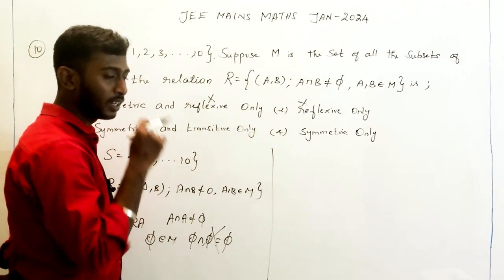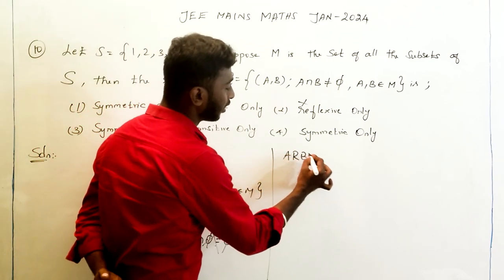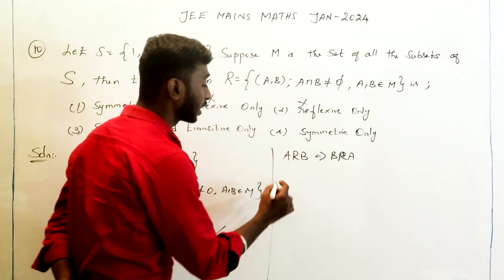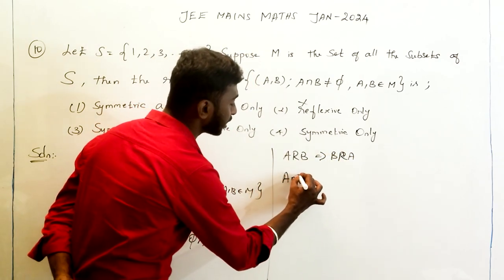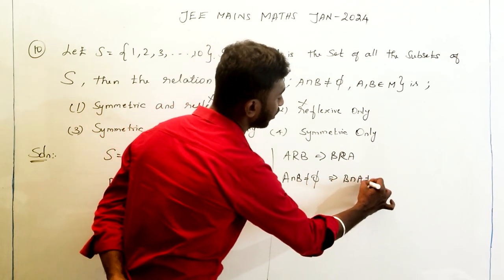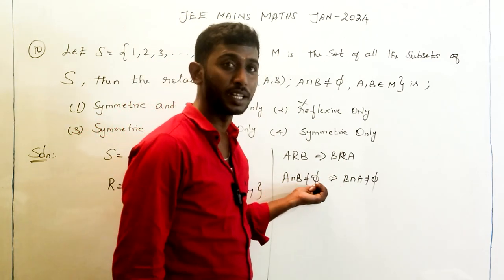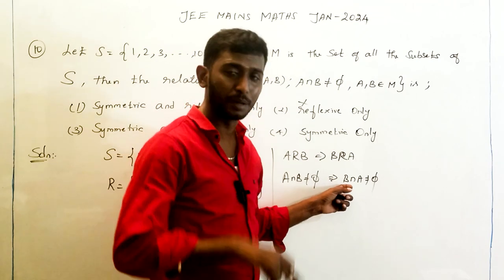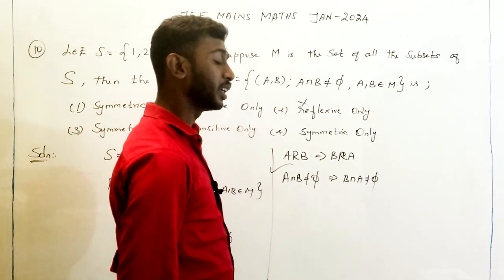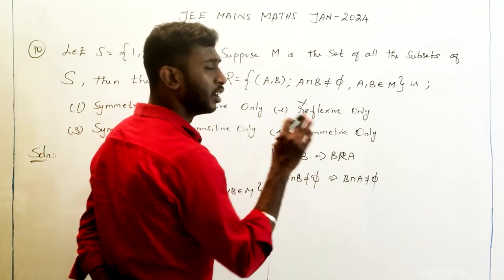Now we check the symmetric condition: if A is related to B, does it imply B is related to A? The condition is A ∩ B ≠ ∅ implies B ∩ A ≠ ∅. Since intersection is commutative — A ∩ B = B ∩ A — if A ∩ B is non-empty, then B ∩ A is also non-empty.